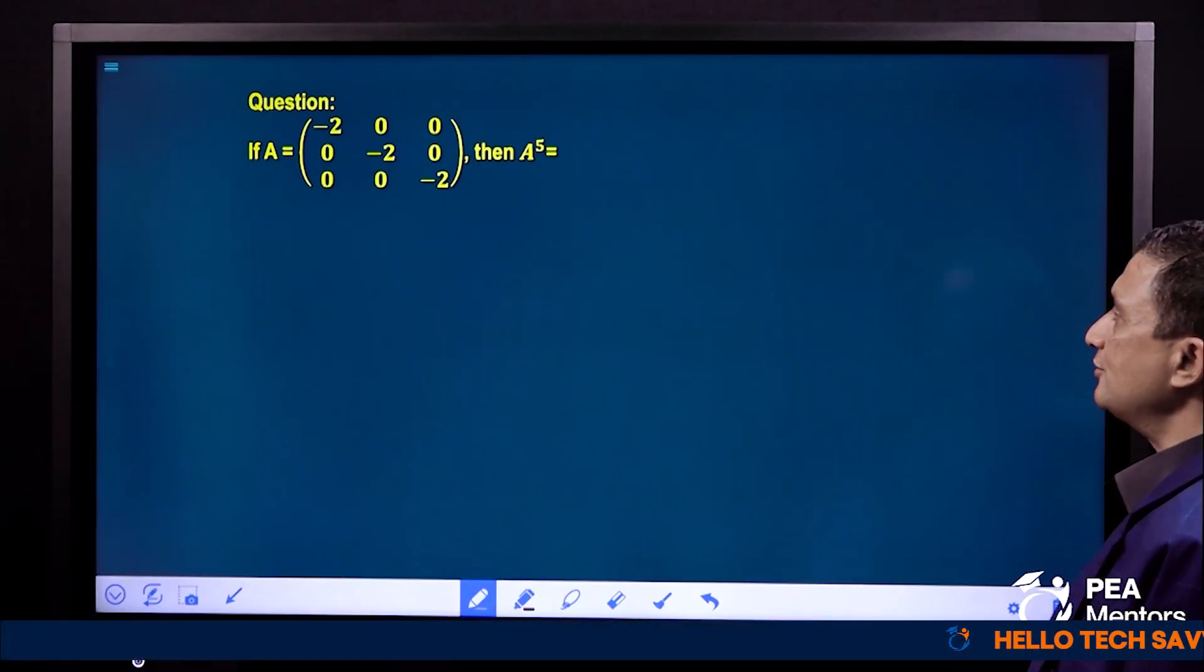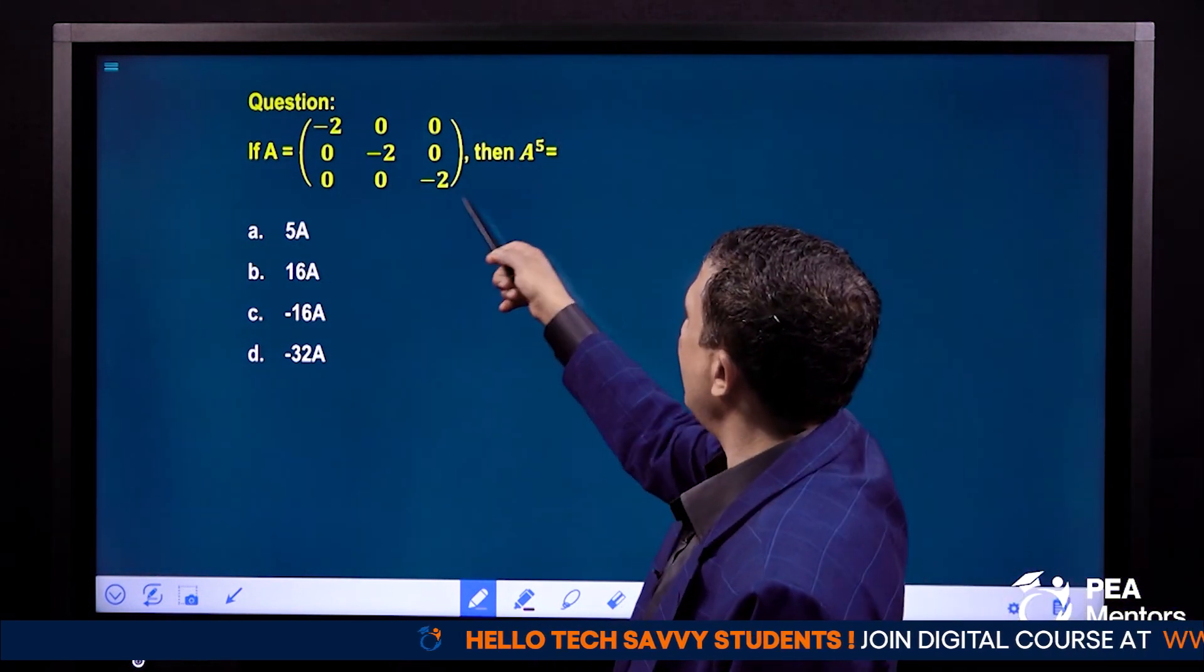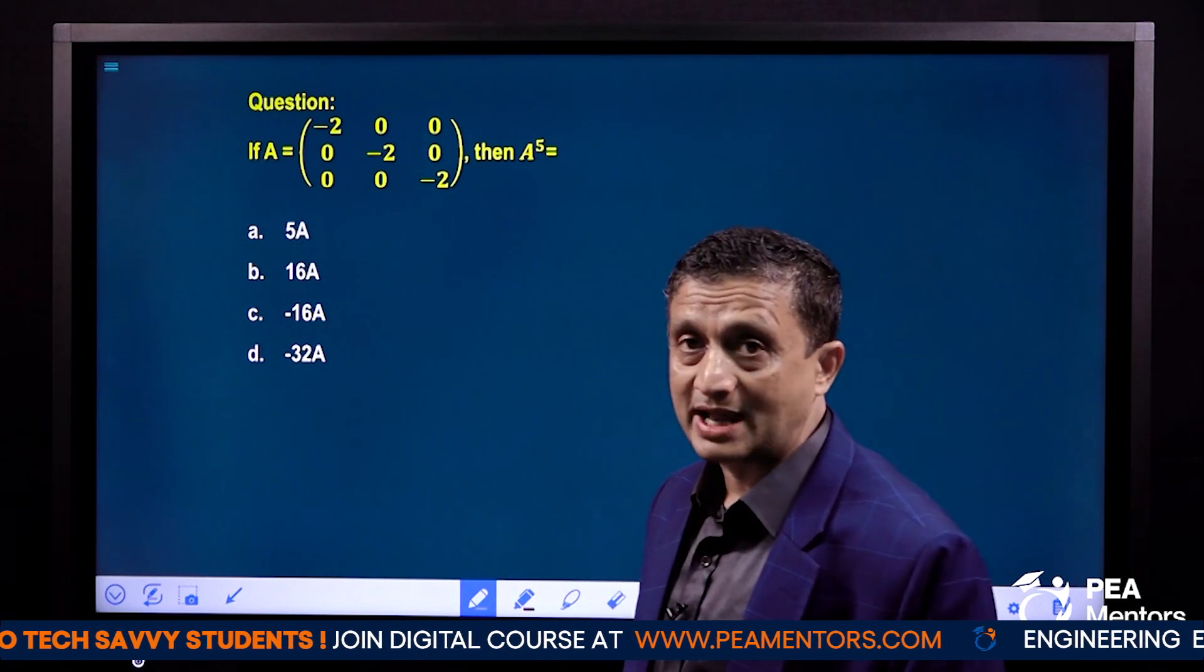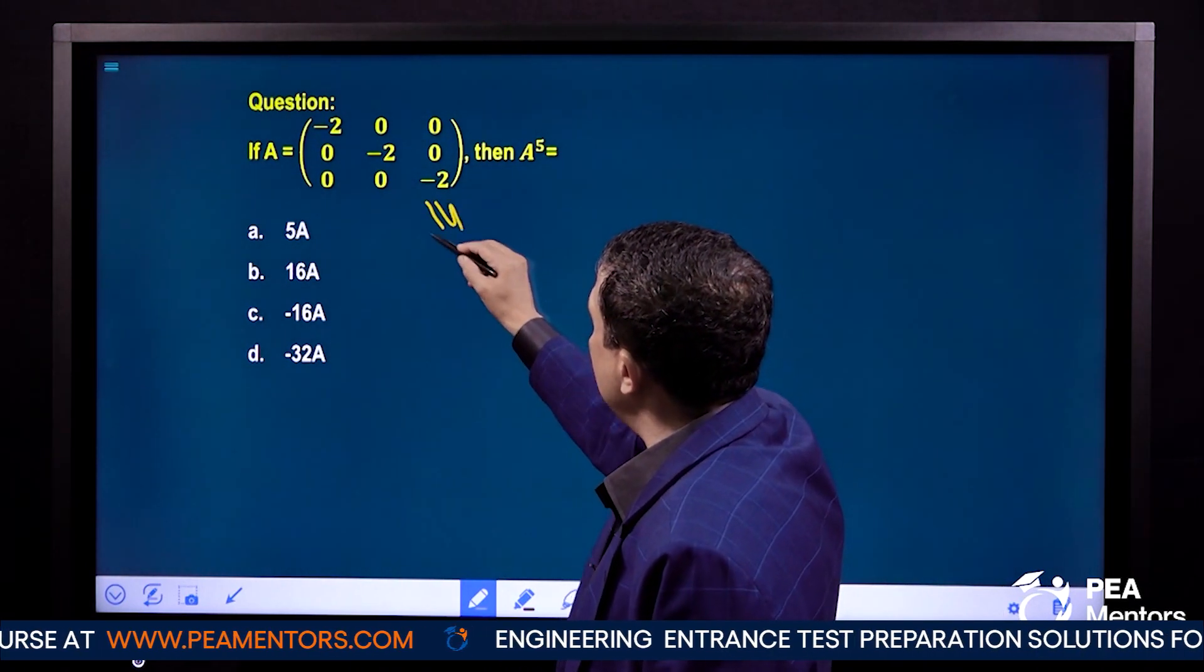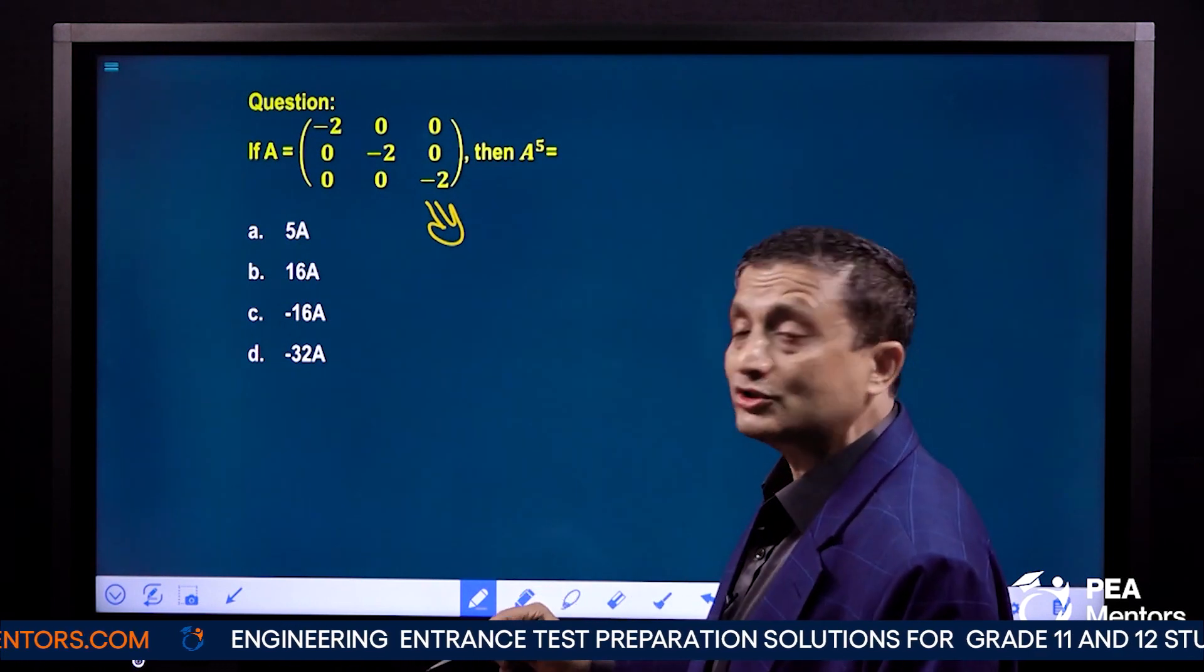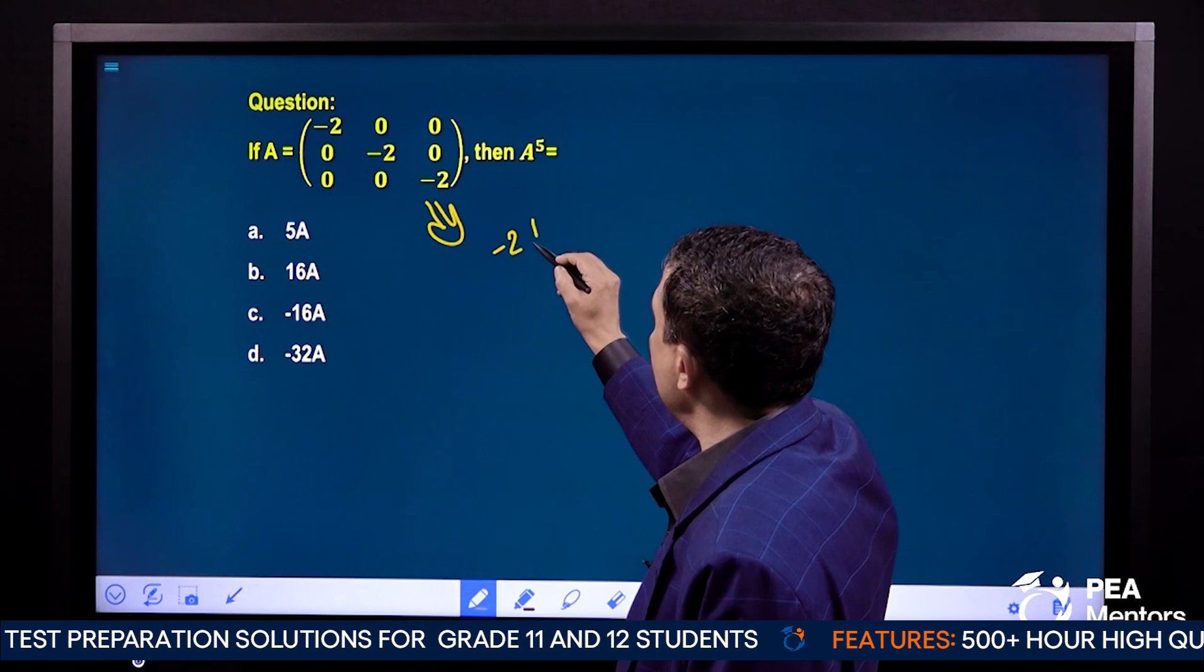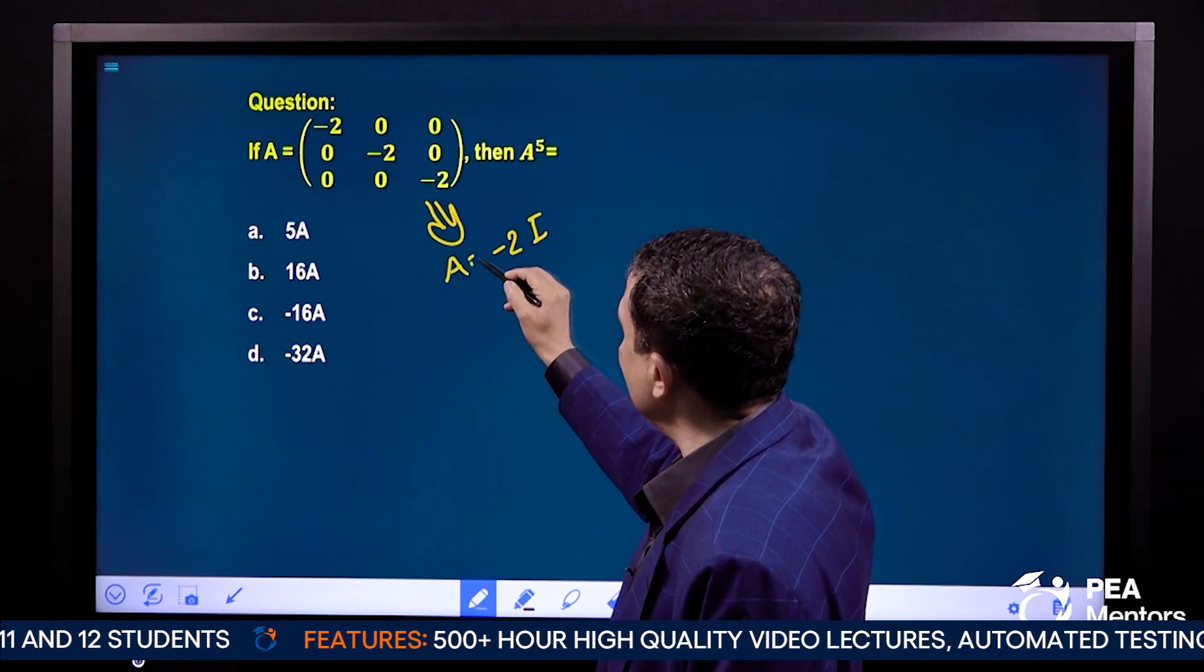If A is this matrix, then A to the power 5 is this. Here the -2 is A to the power 5, and -2 to the power 5. That means -32 A to the power 5. Let's check that. What do we have to do with A matrix? We have to use a scalar matrix. We have to use K times I to form this. We have to use -2I. What matrix is A? -2I.